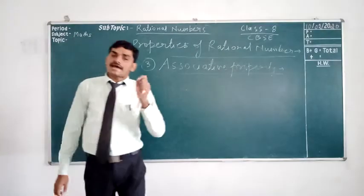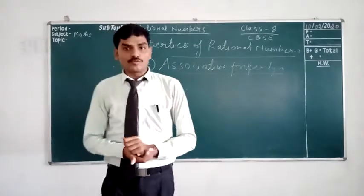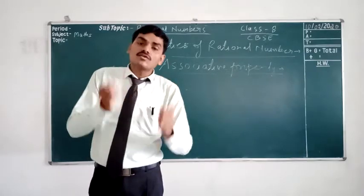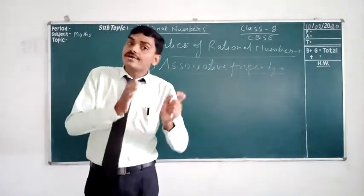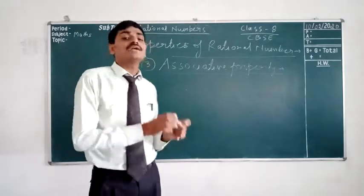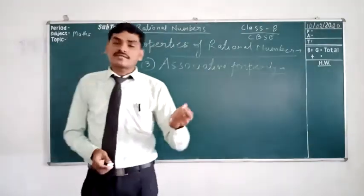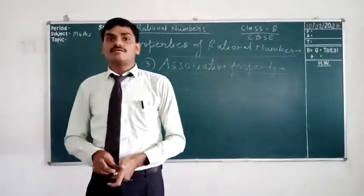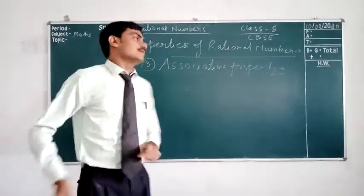The third property is the associative property. What is the associative property? This is the grouping of numbers. After changing the group, we get the same or different answer — it is different for different types of operations. That is, for addition, subtraction, multiplication, and division, it will be different. Now let's discuss one by one.